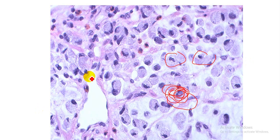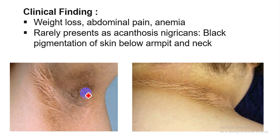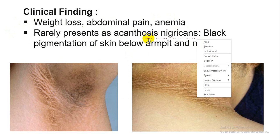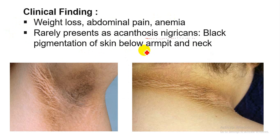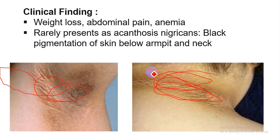This type of diffuse adenocarcinoma is highly infiltrative and has a poor prognosis. Now regarding clinical findings, patients present with weight loss, abdominal pain, and anemia. Another clinical finding is acanthosis nigricans — a black pigmentation of the skin seen below the armpit and in the neck.